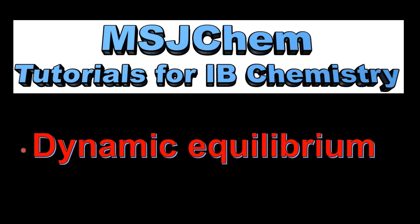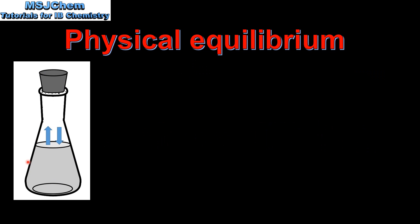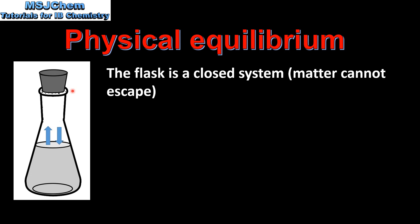This is MSJChem and in this video I'll be looking at dynamic equilibrium. Here we have a flask of liquid — let's say it's water. As you can see there's a stopper in the flask which prevents any matter escaping, so the flask is a closed system in which matter cannot escape.